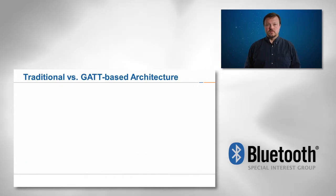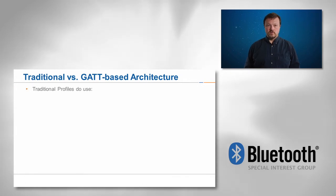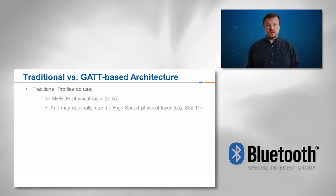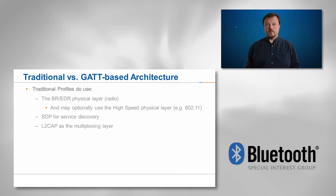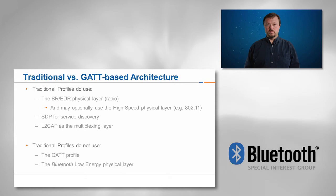Finally, I'd like to close with a summary of the differences between traditional versus GAP-based profiles. Traditional profiles use the BREDR physical layer and may optionally use a high-speed physical layer such as 802.11. They also use SDP for service discovery and L2CAP as the multiplexing layer. Traditional profiles do not use the GAP profile or the Bluetooth low-energy physical layer.